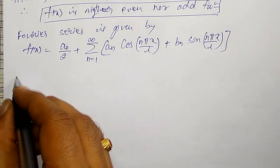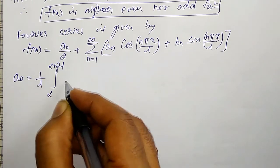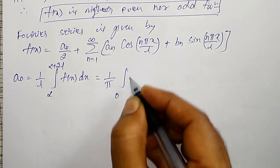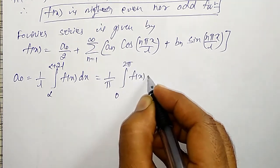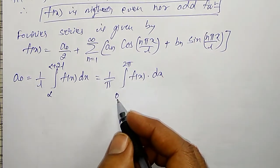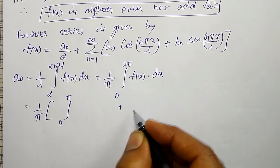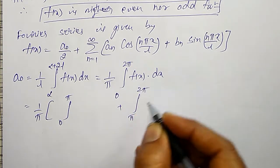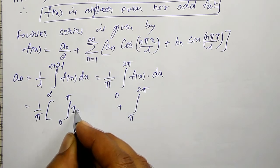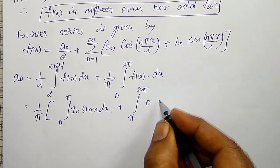Let me calculate A₀ first. It is defined as (1/l)∫[α to α+2l] F(x) dx. With l = π, that is (1/π)∫[0 to 2π] F(x) dx. Since the function is neither even nor odd, I split 0 to 2π into two integrals: (1/π)[∫₀^π F(x) dx + ∫_π^{2π} F(x) dx].